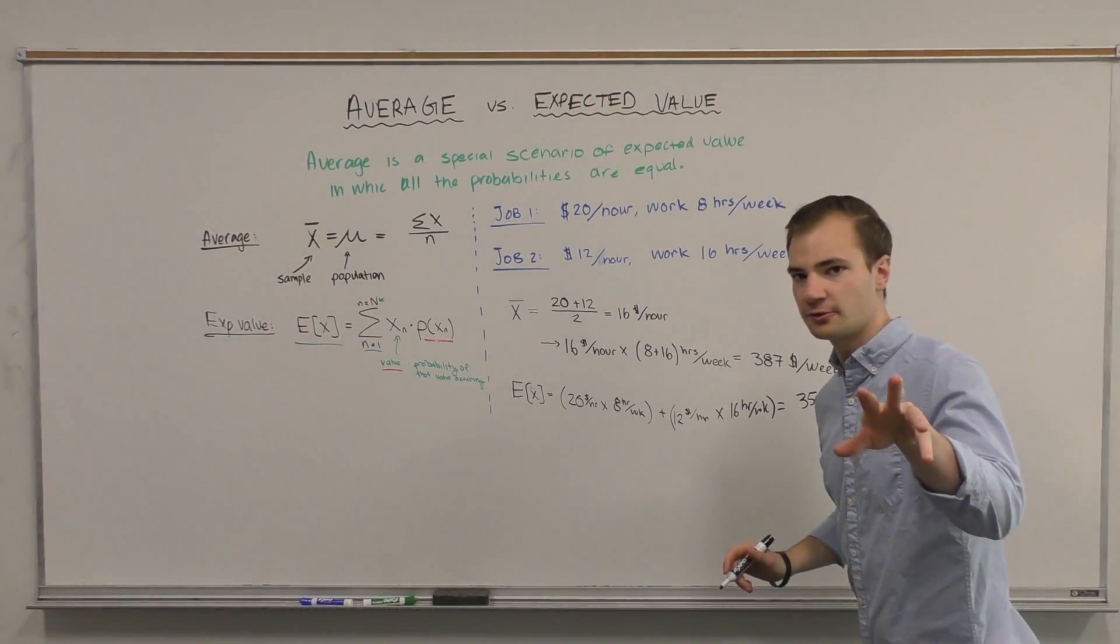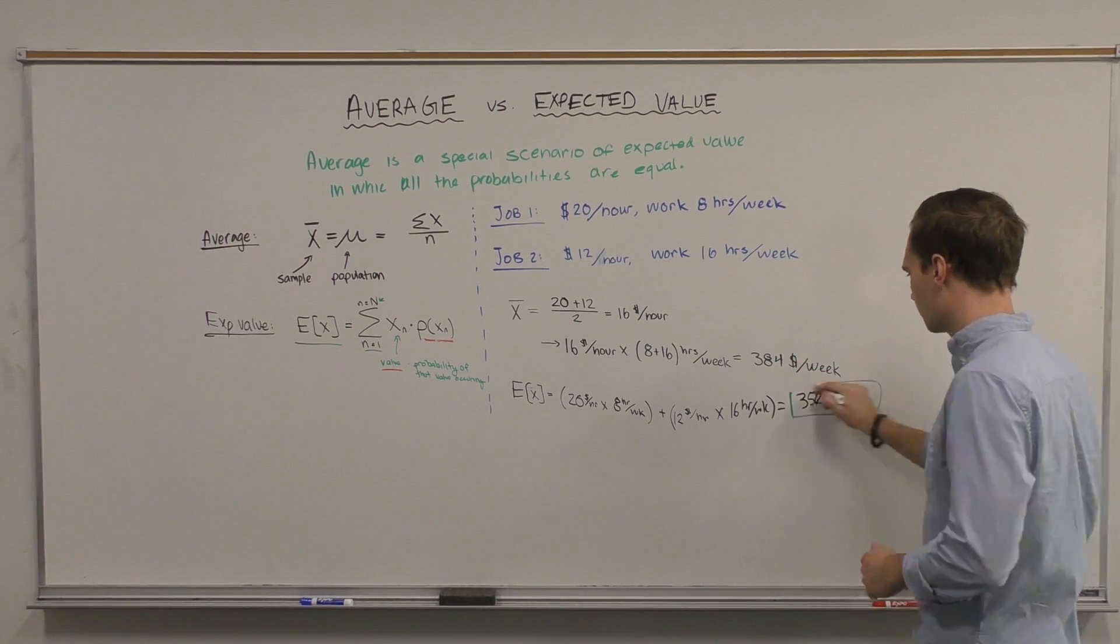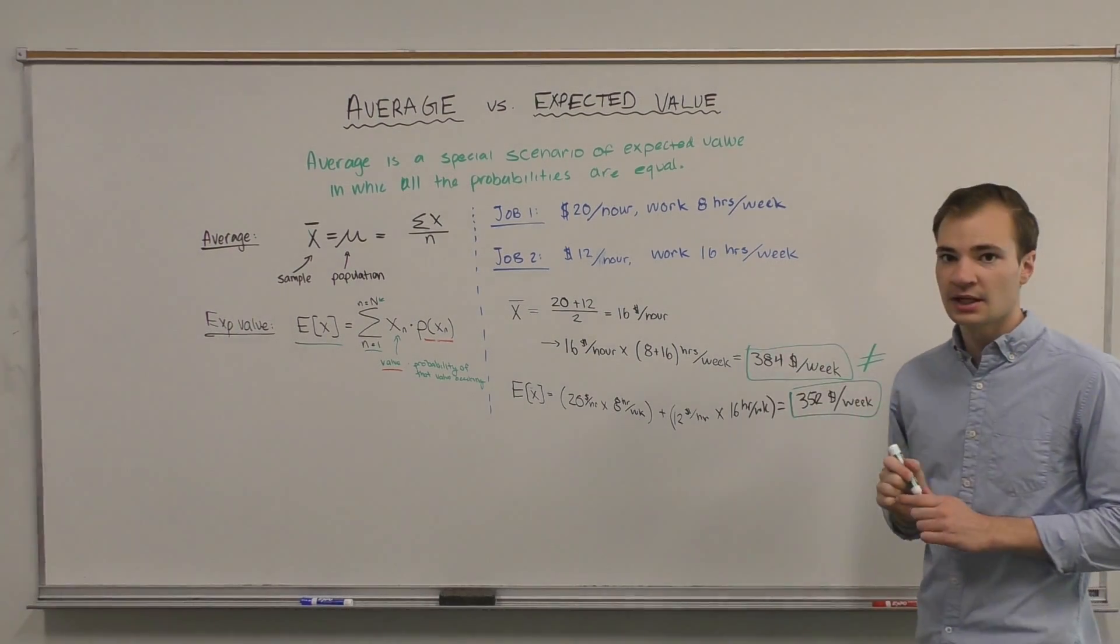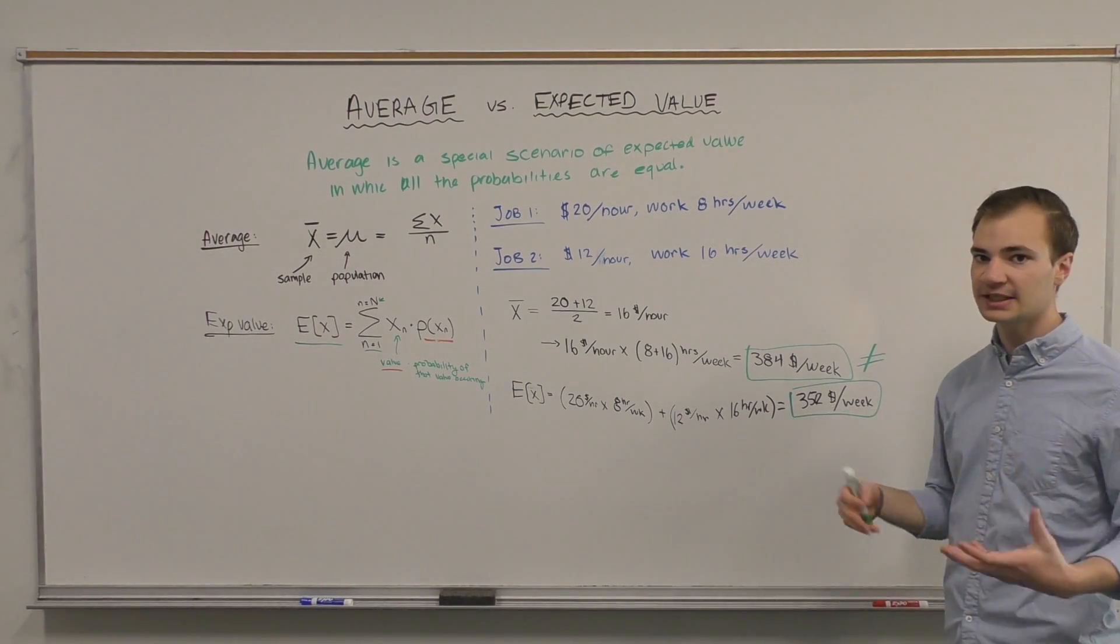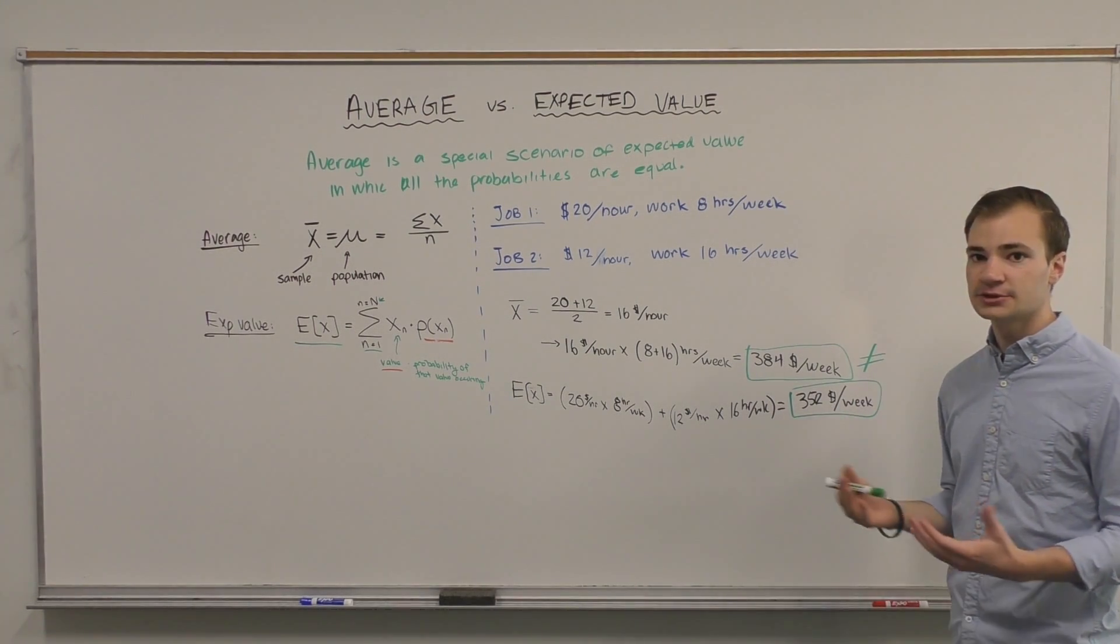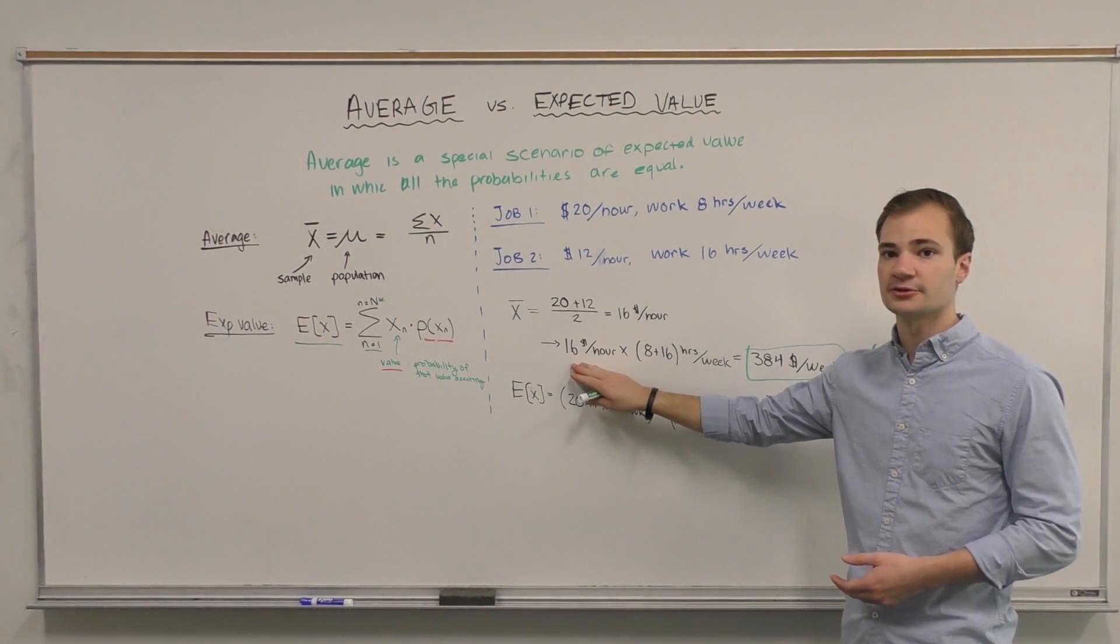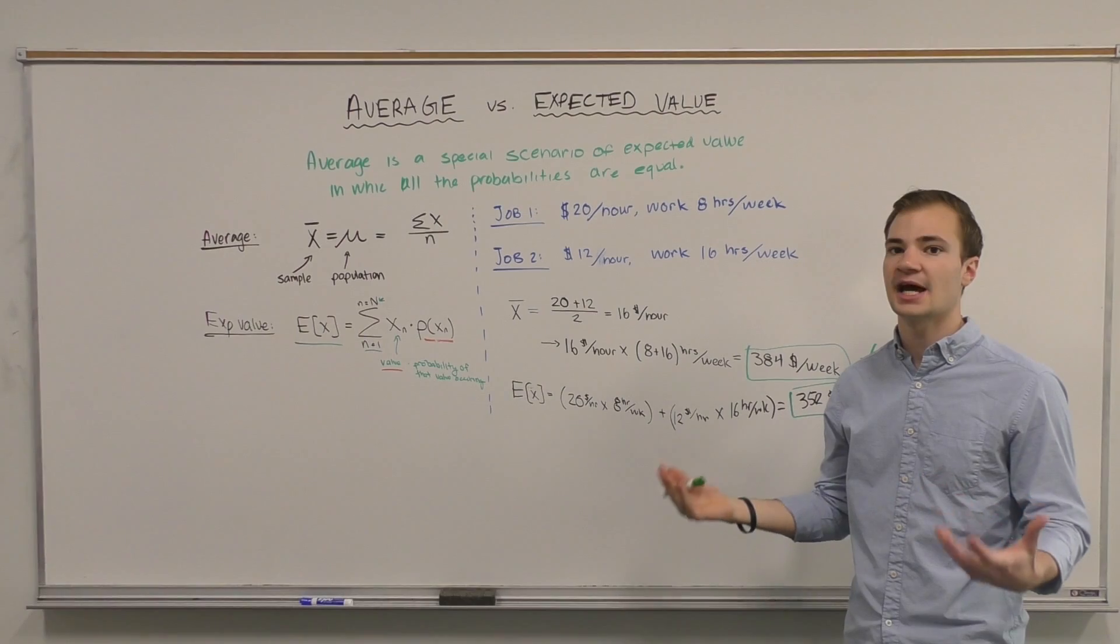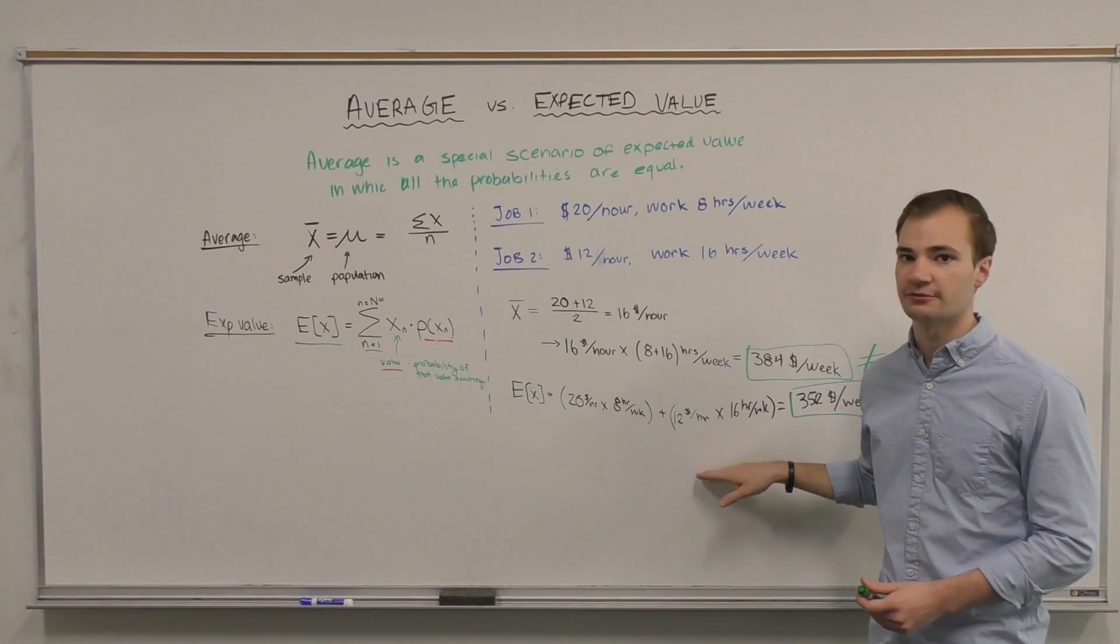For those of you following along, I made two math mistakes. And we see that the outcomes of these two are not equal. We didn't get the same result. Which one's correct? Well, because we're not working the same amount of hours per week, we can't treat it as if it's an equal probability. We have to do our weighted average.